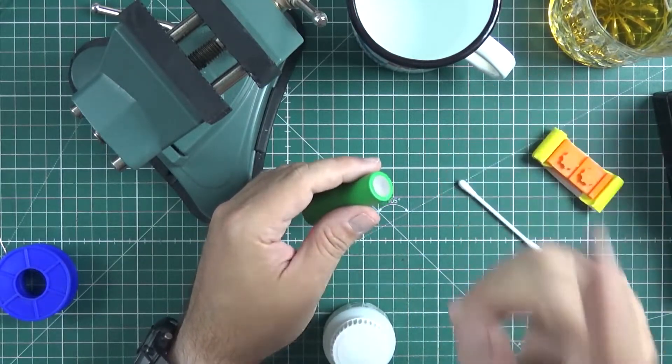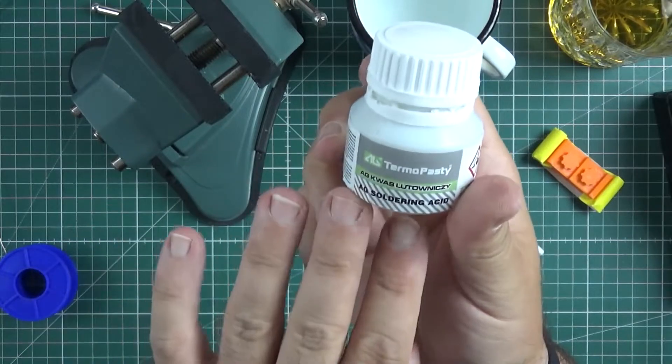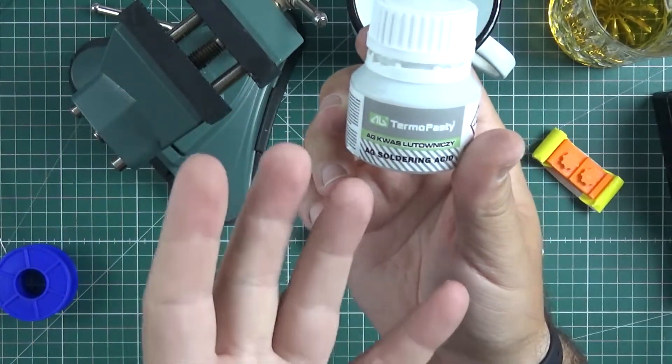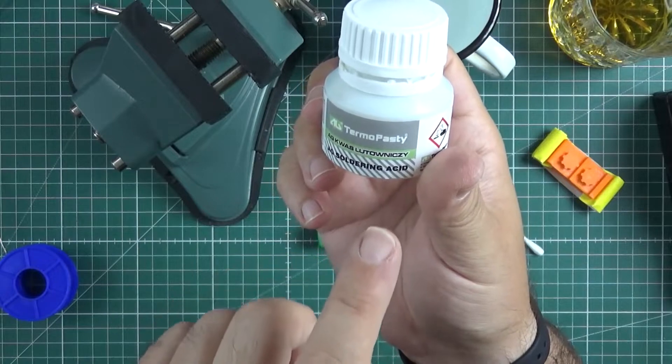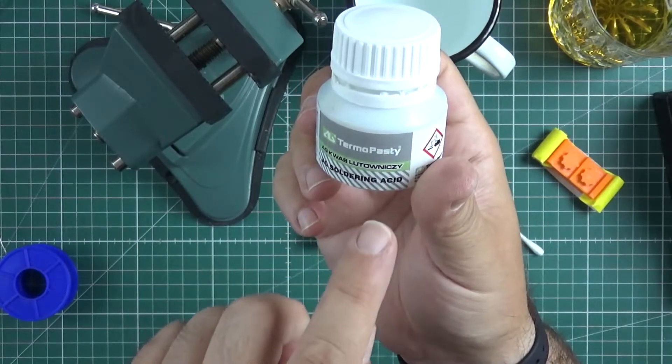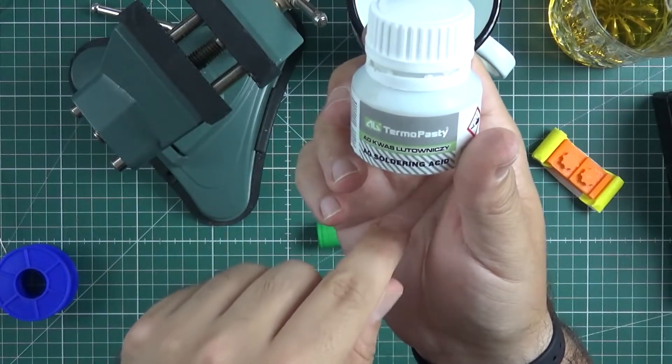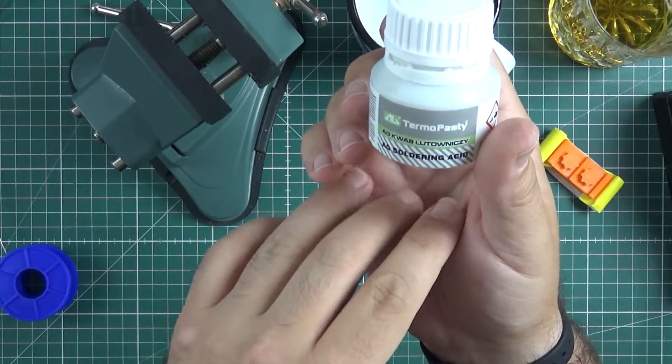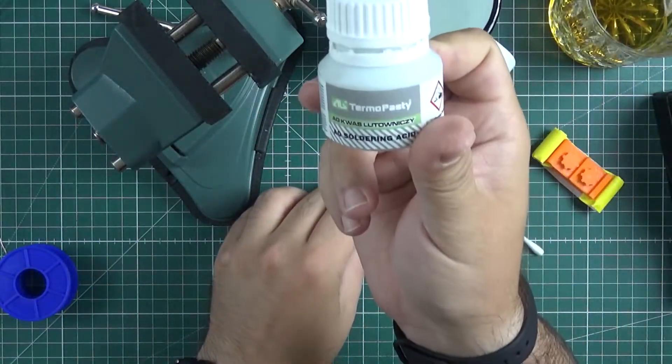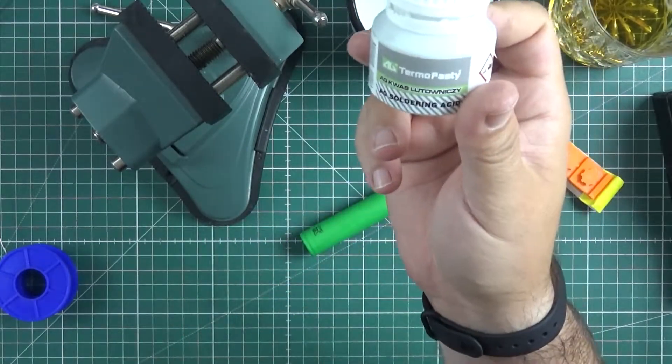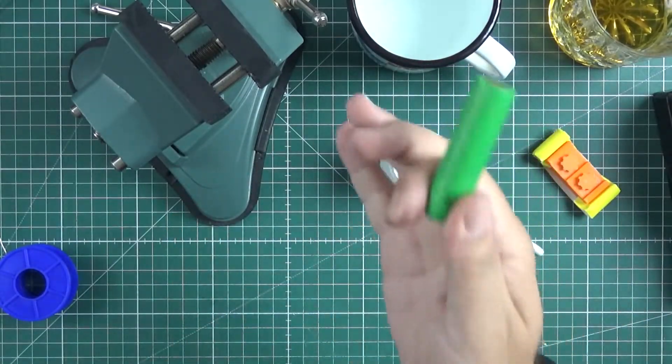What you need is a proper tool. In this case, it's called soldering acid. This is a very powerful flux that is capable of getting through the layer of nickel oxide created on the surface of those connectors. With this, you will have absolutely no problems soldering anything to those bastards. It's super simple, let me show you.